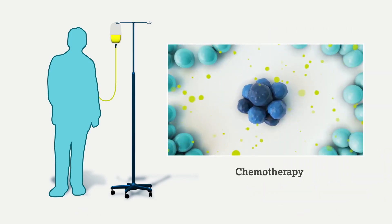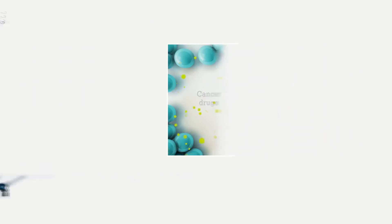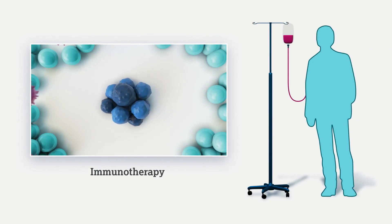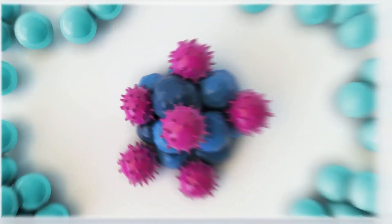Chemotherapy uses drugs that stop cancer cells from growing and making new cells. On the other hand, immunotherapy uses your body's own natural defenses to fight cancer cells. Let's find out how this works.